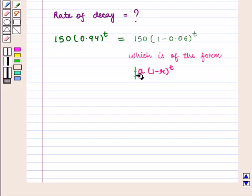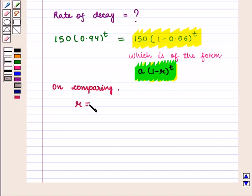This is of the form a times 1 minus r whole raised to power T. Now on comparing these two functions, we get the value of r as 0.06, which is equal to 6%.